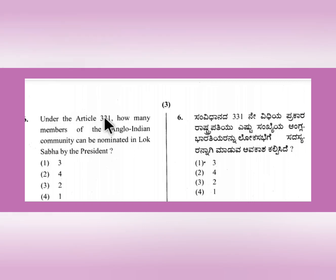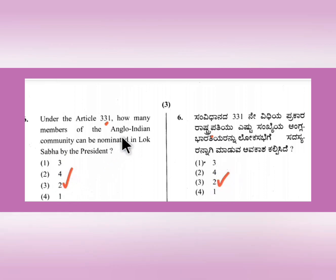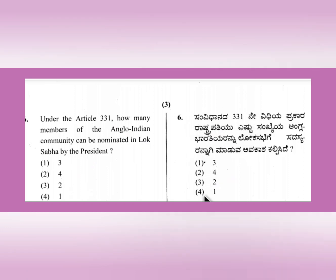Question 6: Under Article 331 of the Indian Constitution, how many members of the Anglo-Indian community can be nominated in the Lok Sabha by the President? The answer is two - two members can be nominated. So remember Article 331 is related to the nomination of Anglo-Indian members to the Lok Sabha. When revising, learn the surrounding content too - just looking at answers may not serve the purpose, as questions will be twisted and turned in the actual exam.